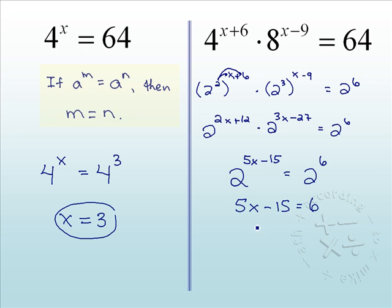To solve this, we're going to add the 15 to get 5x equals 21 and divide by 5. It's not a pretty number, but math isn't a beauty contest. x is 21 fifths.